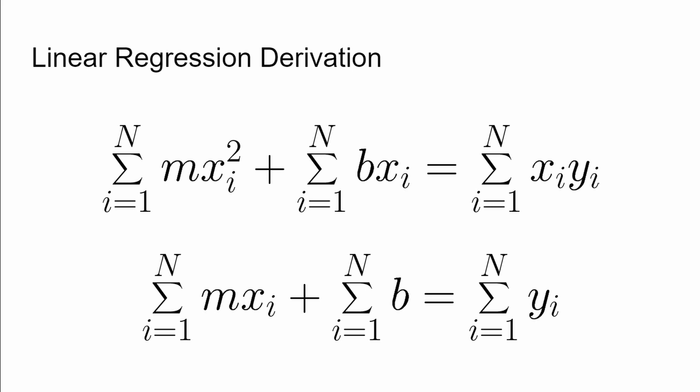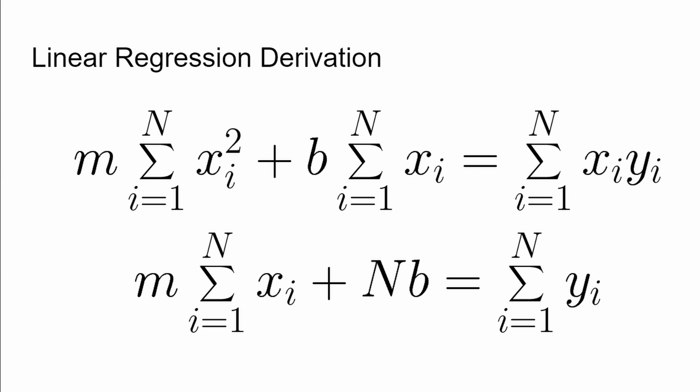That m is a constant and it's not being summed over. So we could pull that out of the summation as well. And now from here it's just easy to solve that bottom equation for b. You just move the term involving the sum of x over to the right-hand side and then just divide through by the constant n.